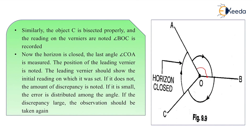Similarly, bisect the ranging rod at C by turning the telescope clockwise, keeping the lower clamp tight and upper clamp loose. This gives angle BOC — note both verniers A and B. Now close the horizon by bisecting ranging rod at A to calculate angle COA. The leading vernier reading is noted. Vernier A should show zero degrees and vernier B should show 180 degrees after closing. If the error is small it is distributed among the angles — for example, 30 minutes split as 15 minutes each.